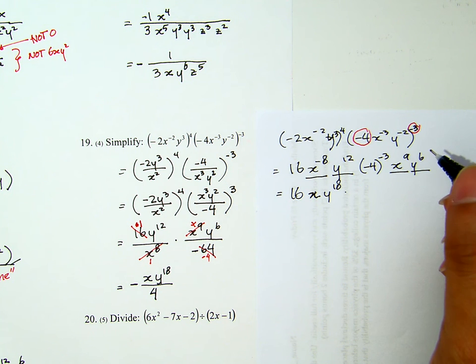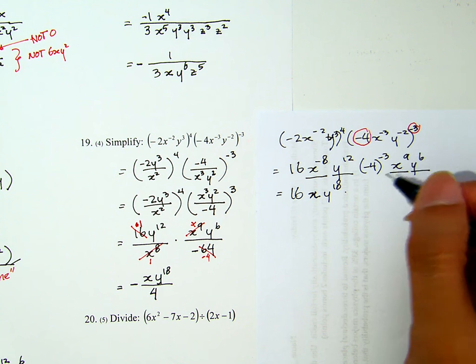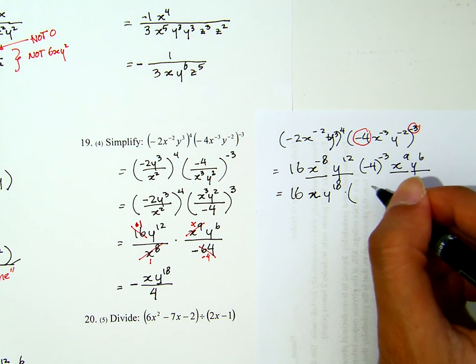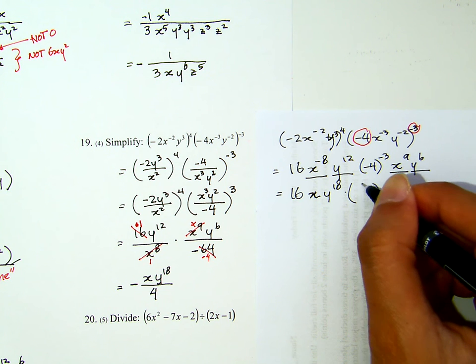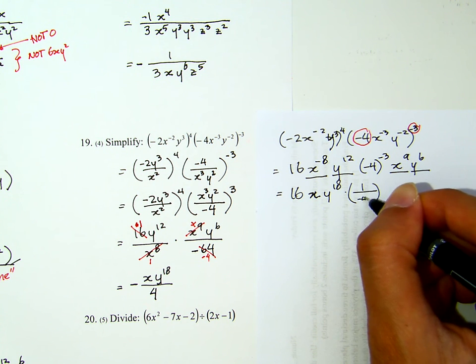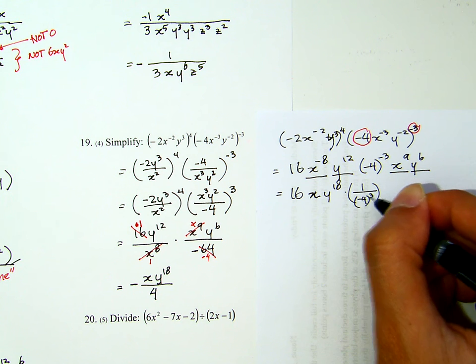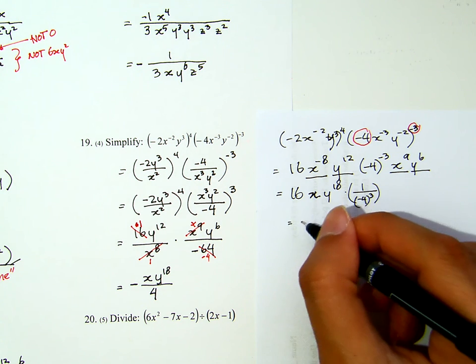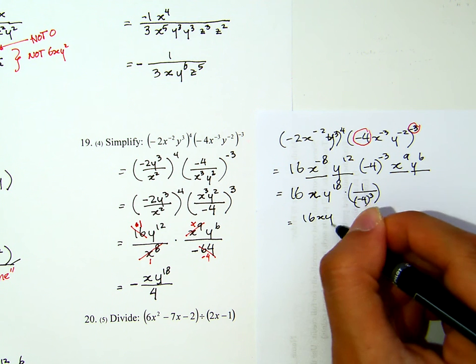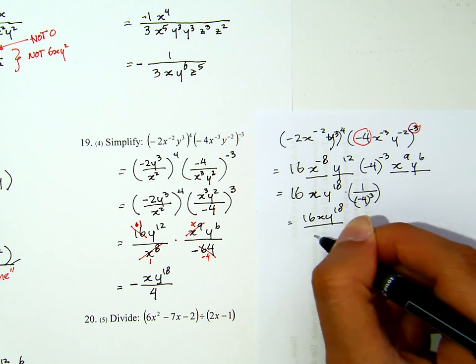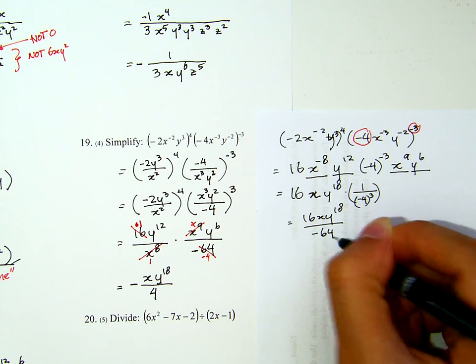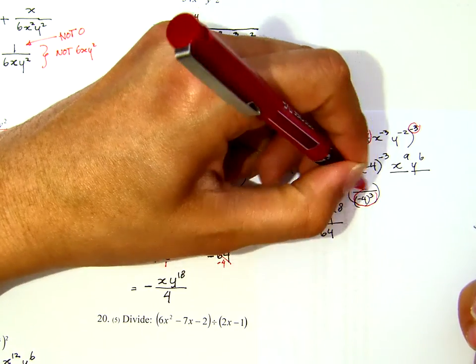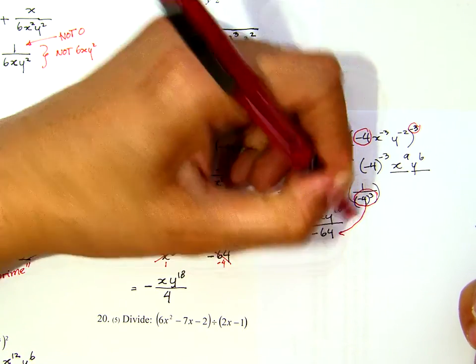Instead of doing it in one single step, let me do it in two steps. I will rewrite this as 1 over negative 4 cubed. And that's 16xy to the 18th over negative 64, right?